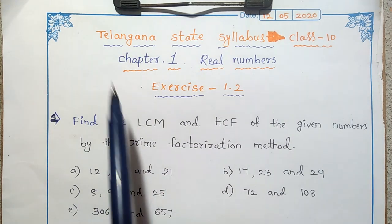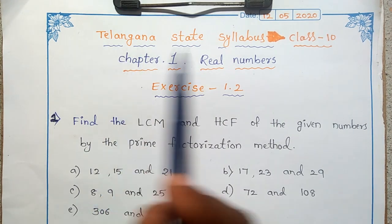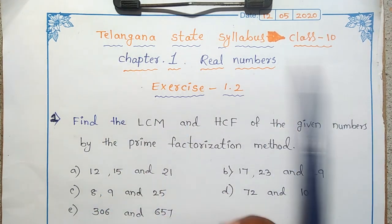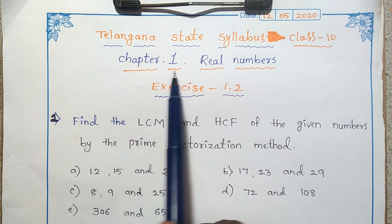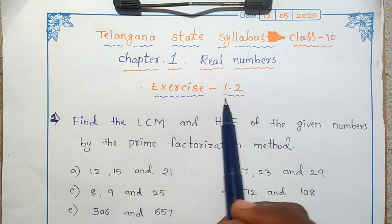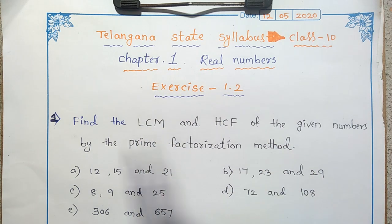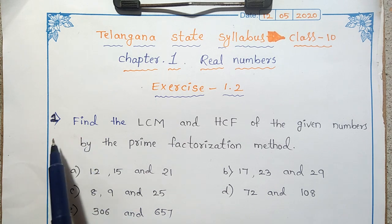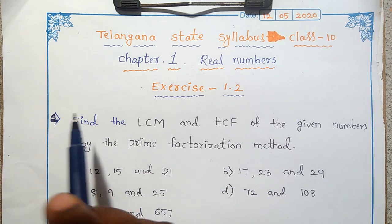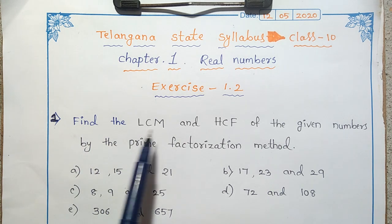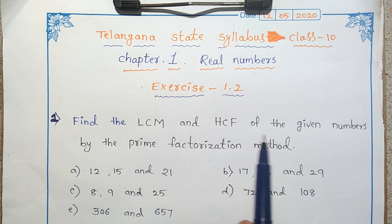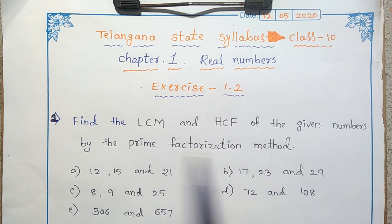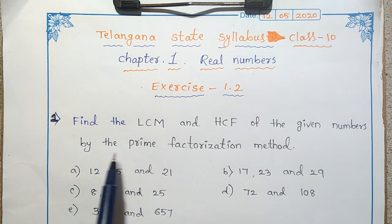Hi friends. Now I am going to explain Telangana state syllabus class 10th chapter 1, Real Numbers, from exercise 1.2. Let me explain the first problem: find the LCM and HCF of the given numbers by the prime factorization method.